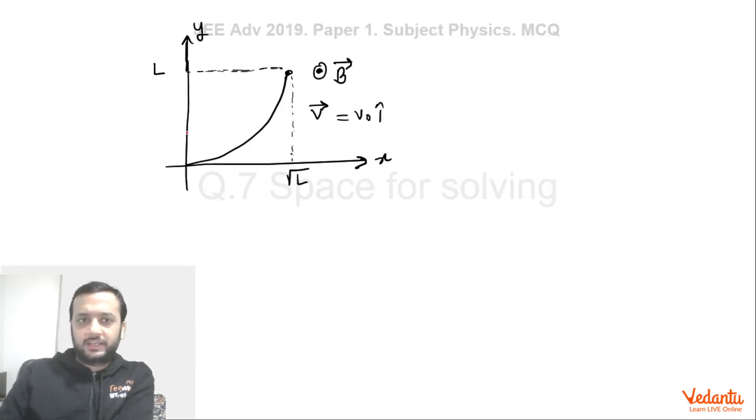We will talk about them as we solve this. There was also a figure given in the question. So you can see this is the wire and the top y coordinate of the wire is L and the x coordinate is √L which satisfies the equation y equals x square.